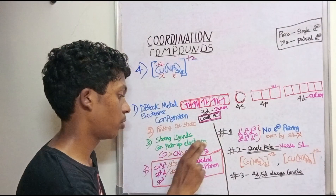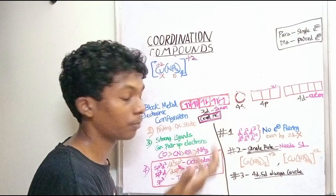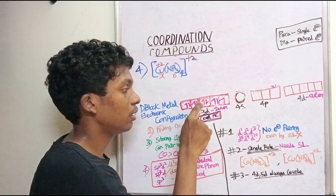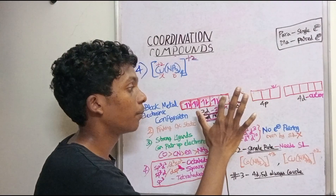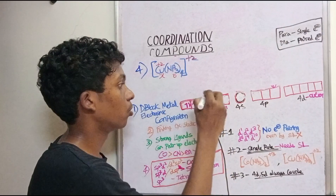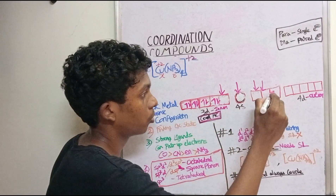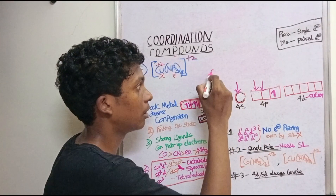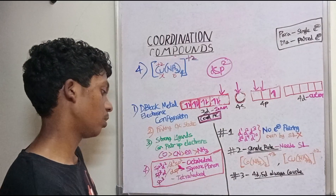Ammonia is a strong ligand. So with a strong ligand, we apply the single electron rule and pair the electrons. We use one d-orbital, one s-orbital, and two p-orbitals, giving dsp² hybridization.